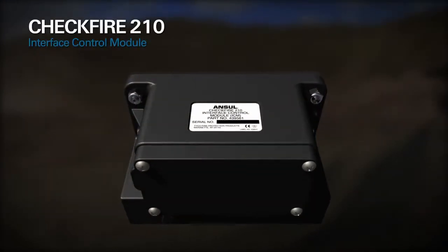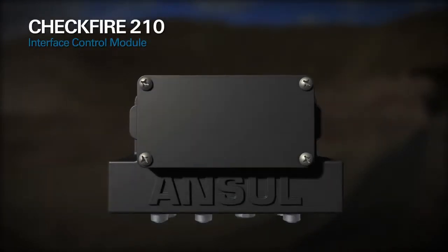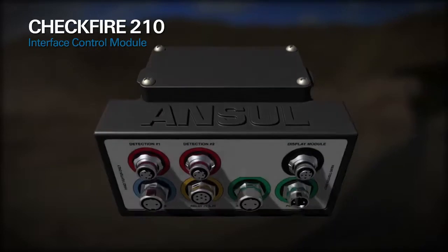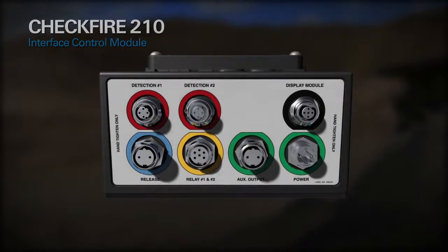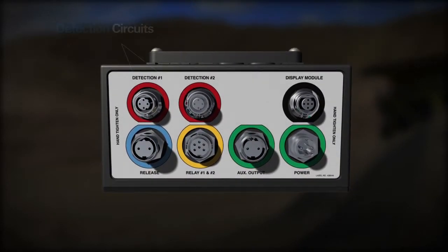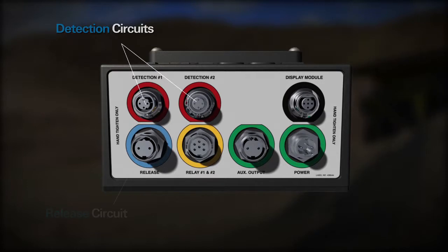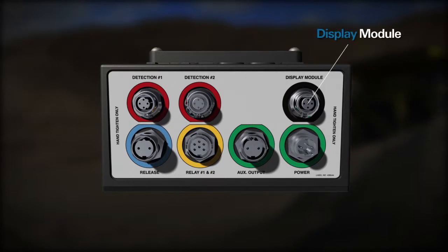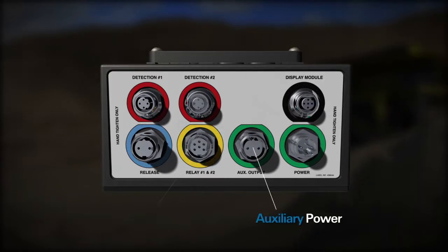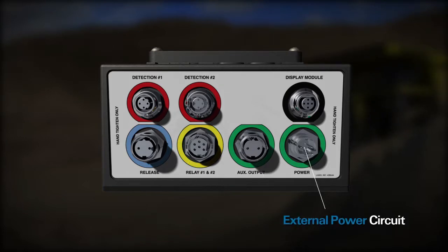The CheckFire 210 interface control module is connected to the display module using a communication cable. The module houses receptacles for two detection circuits, a release circuit, display module, auxiliary power, relay, and external power circuit.